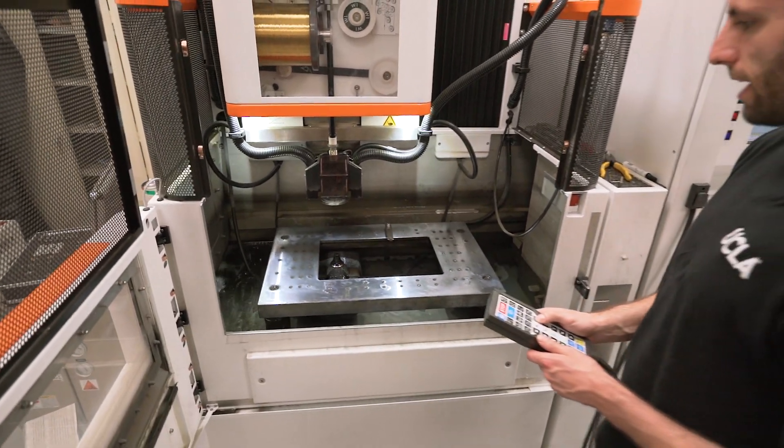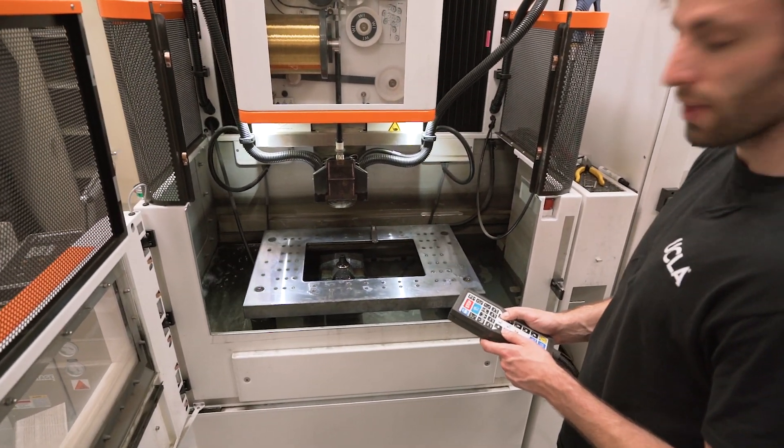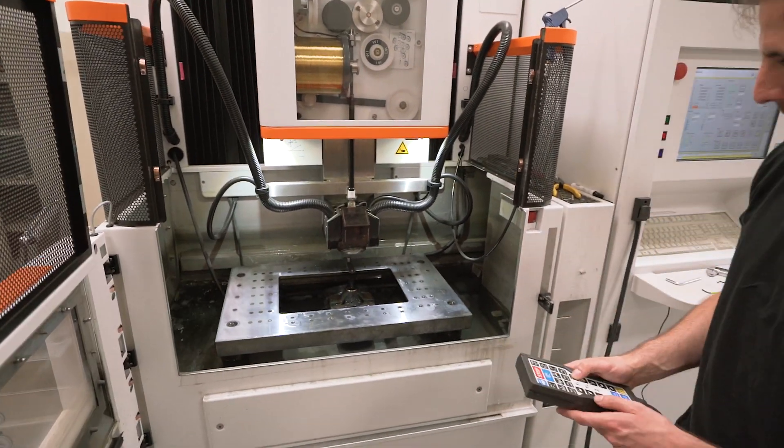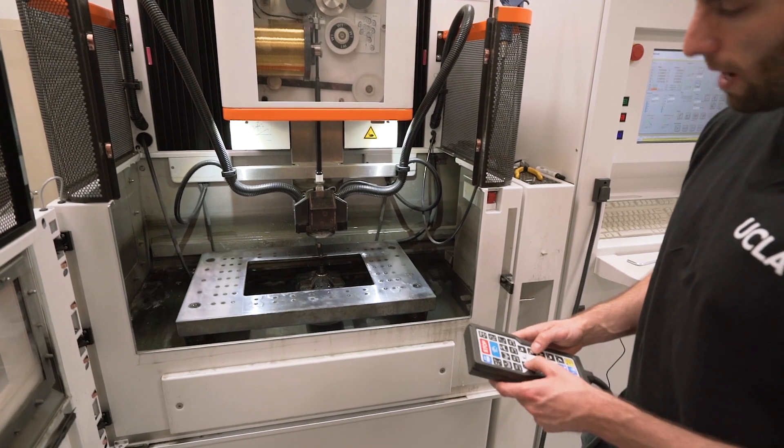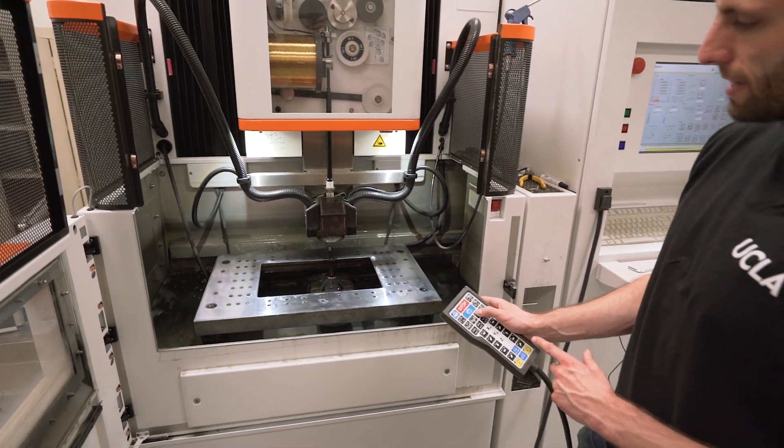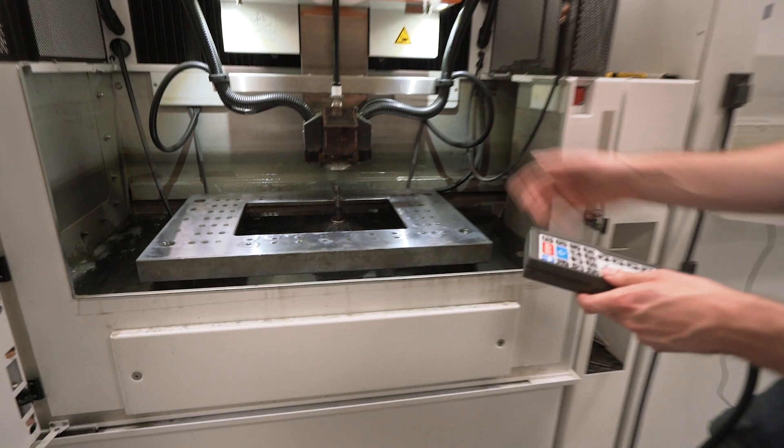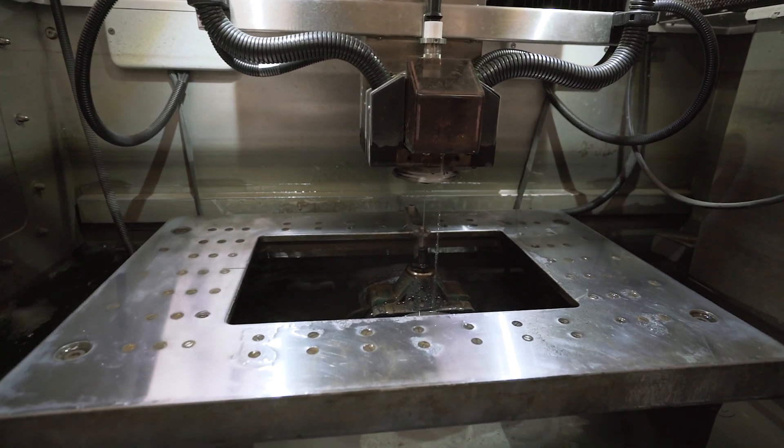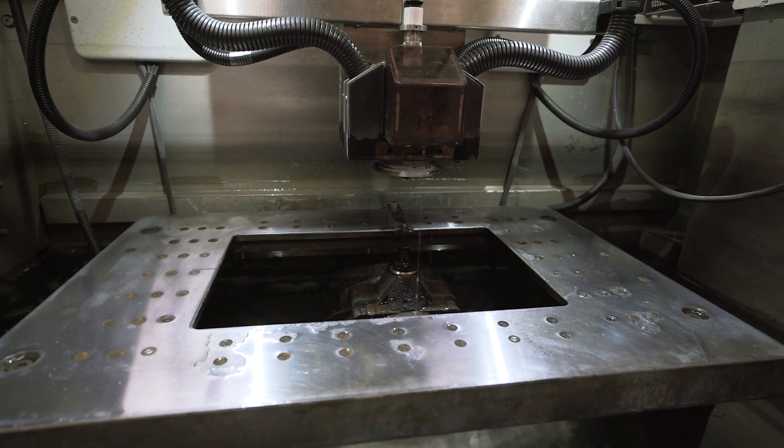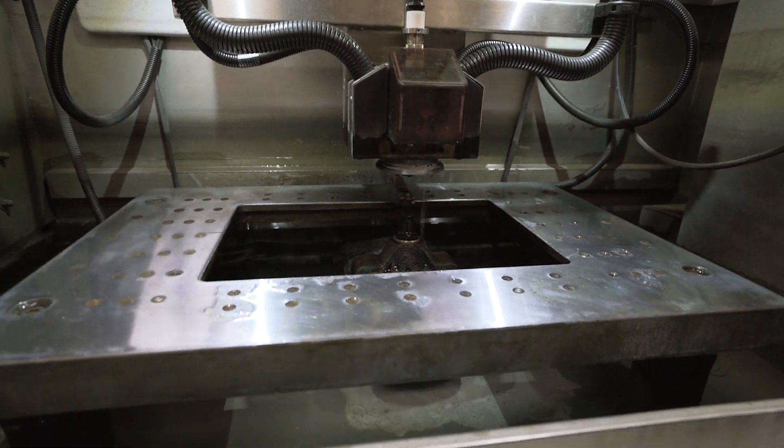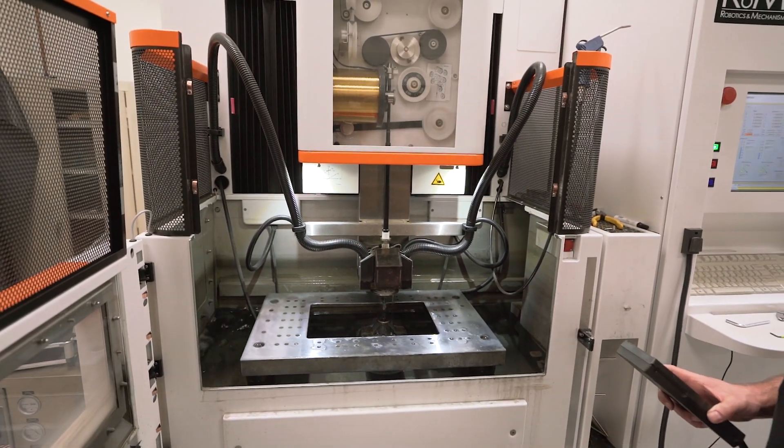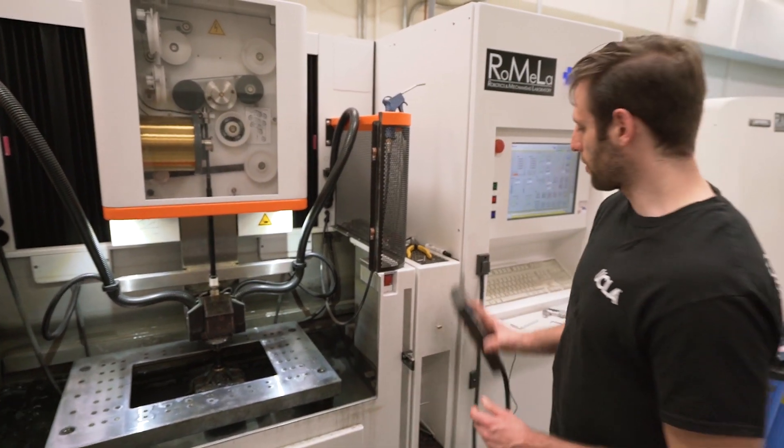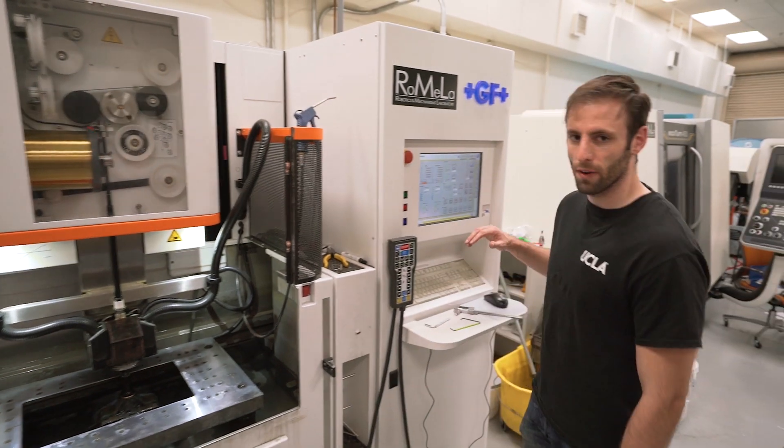And then what you want to do is thread the wire through the eyelet. So what I do to kind of see if I'm aligned, I just turn on the jet and the jet will kind of tell you where you need to go. So now I can see that it's going through the middle. So I know that I can thread it. Okay. So now the wire is threaded through the eyelet and we're going to come back over here.